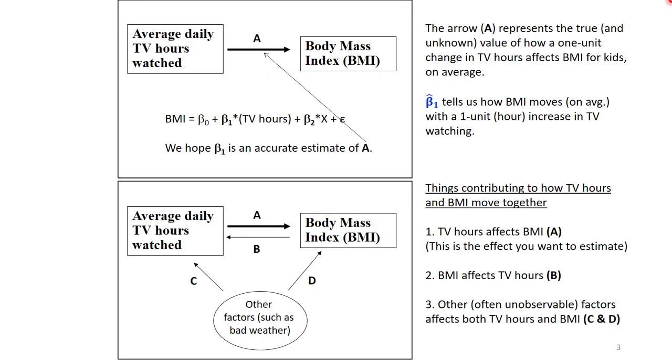Let's take the case from the last video on what you should control for, what happens when you control for a variable. That's looking at how average daily TV hours watched among children affects their body mass index. Recall that when I have an arrow pointing like this, then the value of that arrow represents the true causal effect of a one unit increase on the pointing variable on the variable being pointed at. So A here represents the true and unknown value of how a one hour change in TV affects body mass index on average.